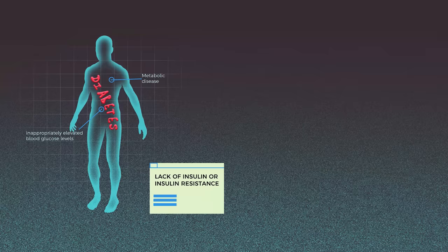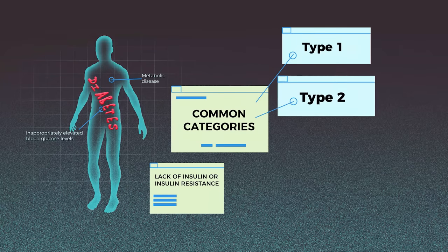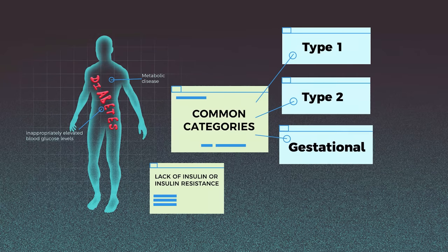Let's talk about diabetes. Full name: diabetes mellitus. Common types of diabetes are type 1, type 2, gestational, and maturity-onset diabetes in the young. Diabetes is essentially inappropriately elevated blood sugar levels because of lack of insulin or insulin resistance.